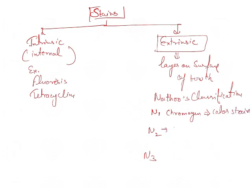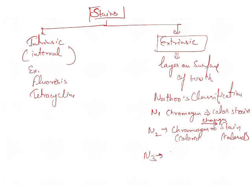In N2, the colored material changes color after binding to the tooth. The chromogen is colored and the stain is also colored, but the color of the stain is different from that of the chromogen. In N3, a colorless material binds to the surface of the teeth and colored stains are formed — there is a chemical change as the material undergoes a chemical reaction to cause staining.